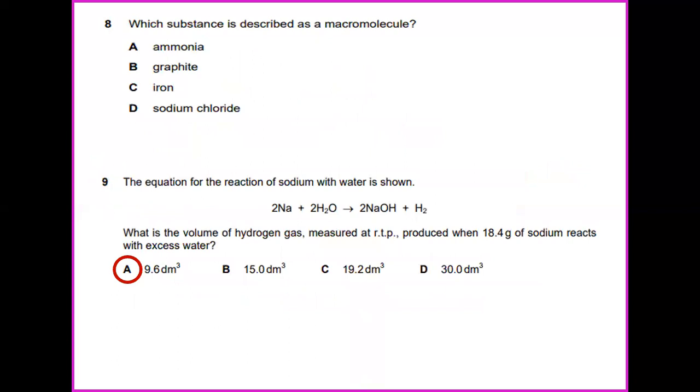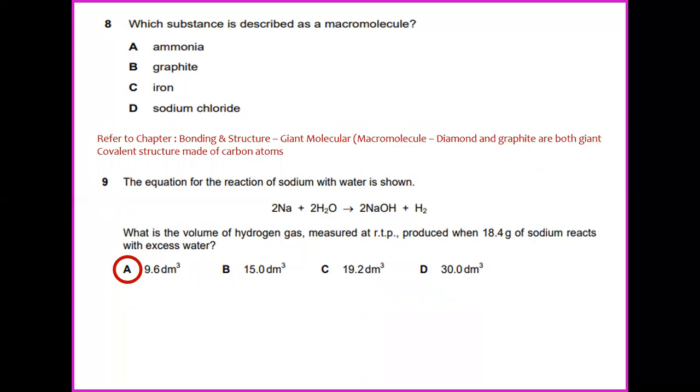Which substance is described as a macromolecule? Refer to chapter bonding and structure. A giant molecule is similar to macromolecule. Under this topic giant molecule or macromolecule, diamond and graphite are both giant covalent structures. So the answer would be B.